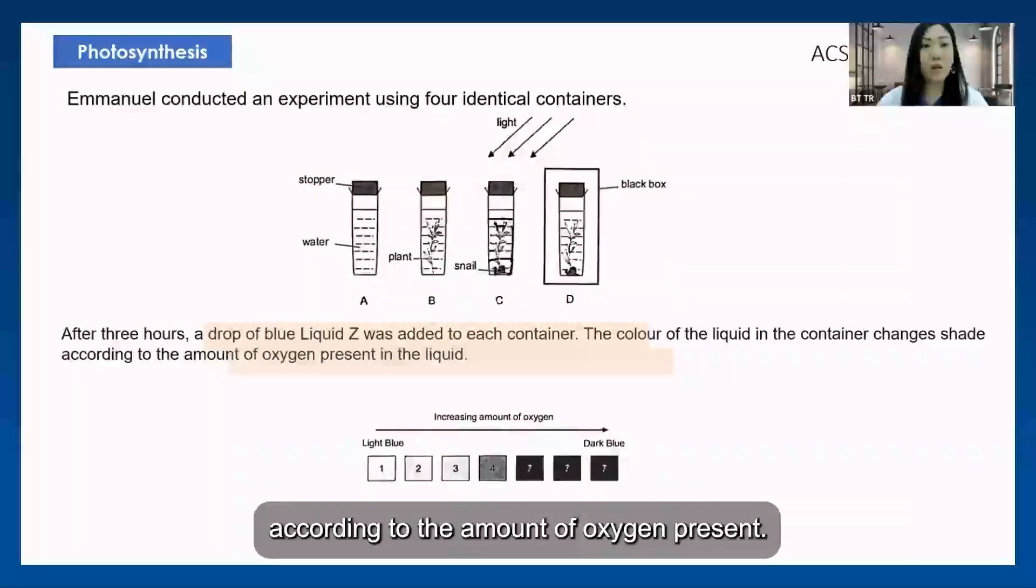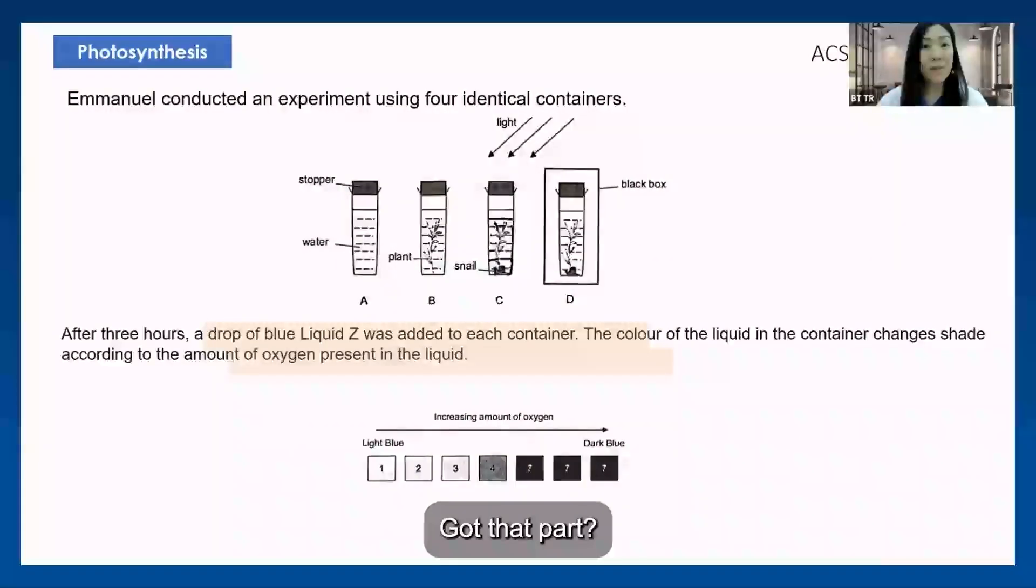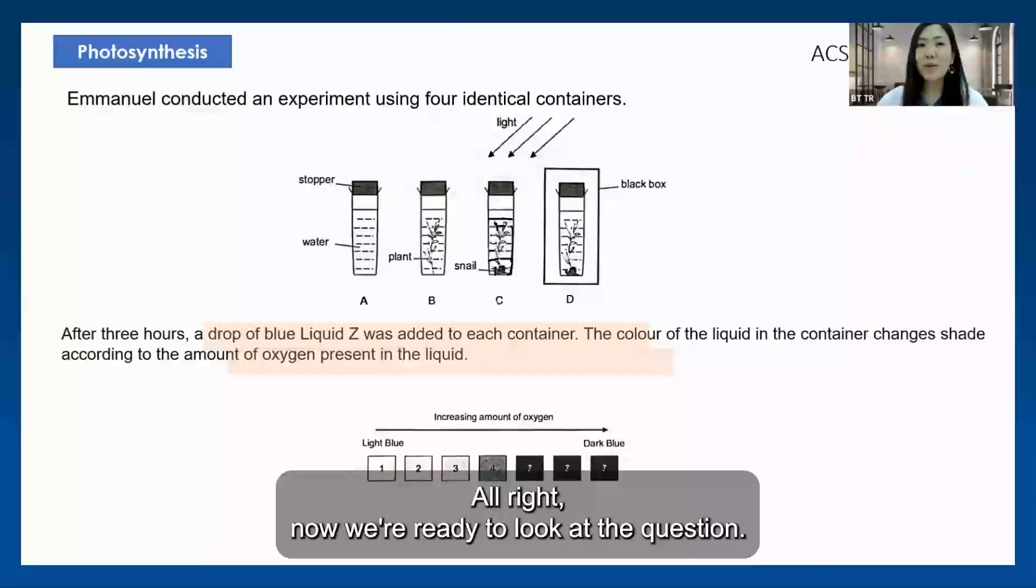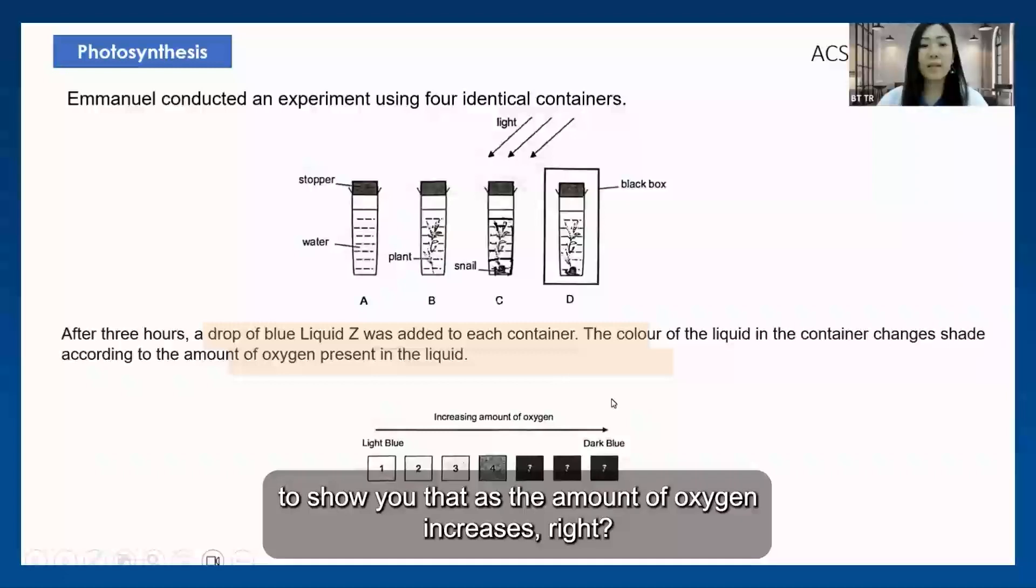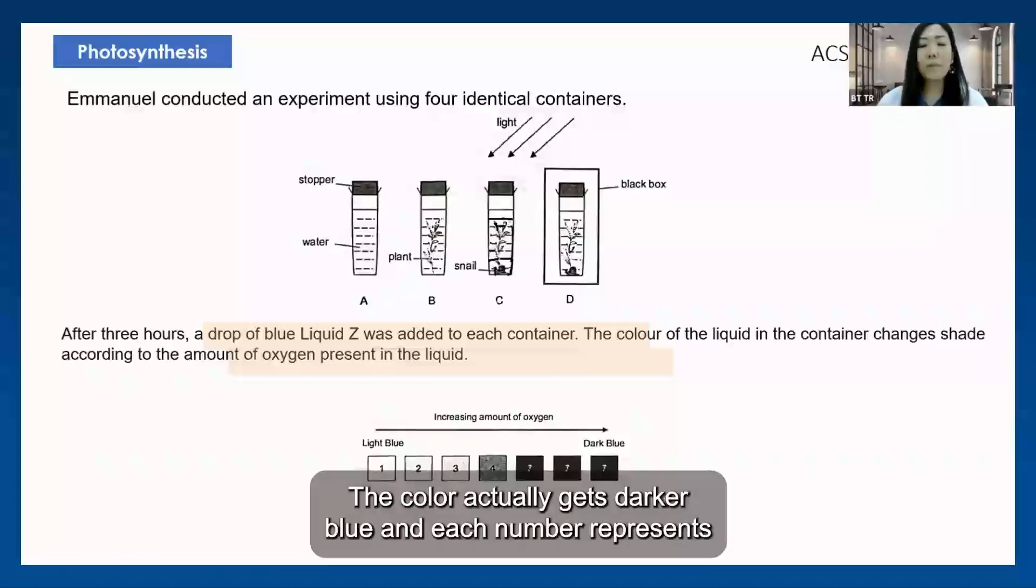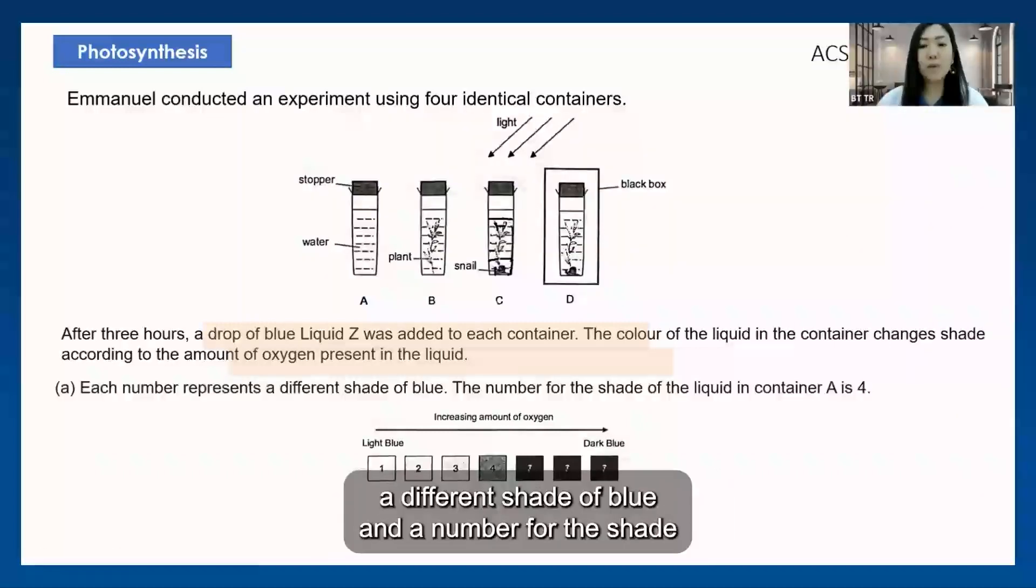Now we're ready to look at the question. With the information, they have a diagram here to show you that as the amount of oxygen increases, the color actually gets darker blue. Each number represents a different shade of blue.